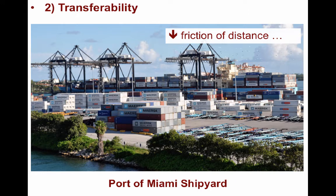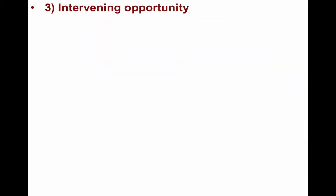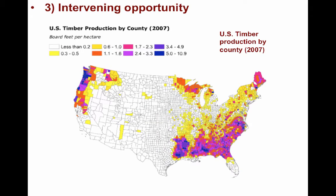If the friction of distance is too great, interaction will not occur in spite of complementarity. In general, the friction of distance has decreased over time as transport technology has improved. The third and final concept is intervening opportunity, which reduces the attractiveness of more distant locations. It is typically considered the reason for a lack of interaction between two complementary locations. Complementarity between two locations will only generate movement if there is no closer intervening location — a closer complementary alternative with a cheaper overall cost of transportation.